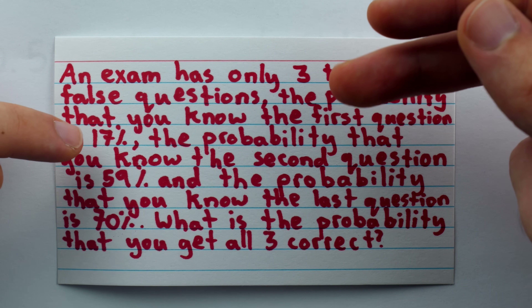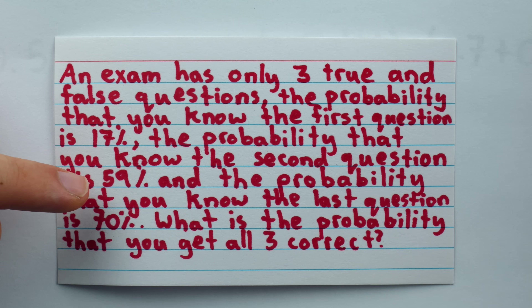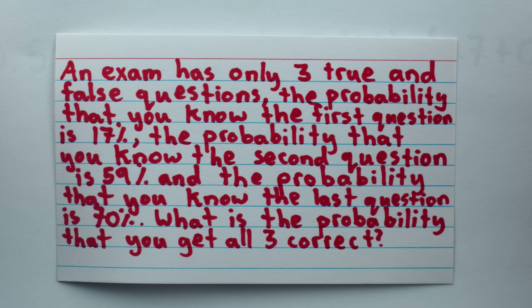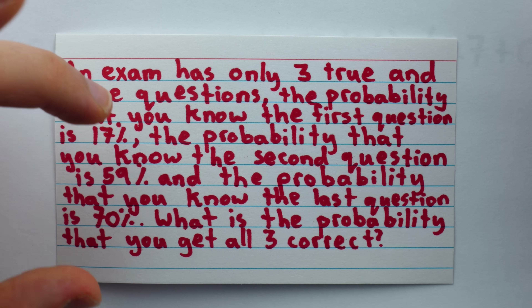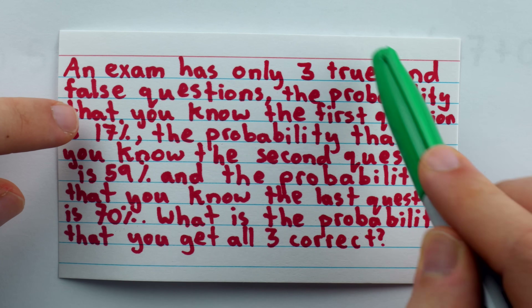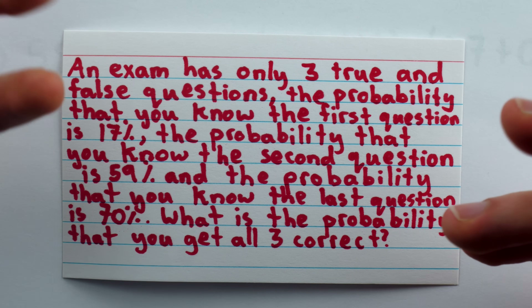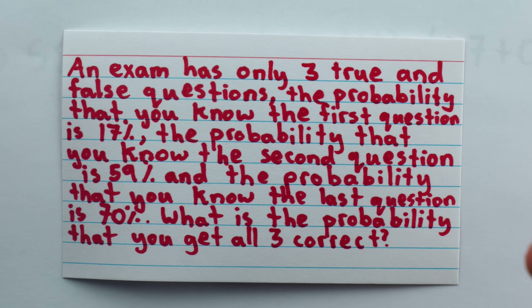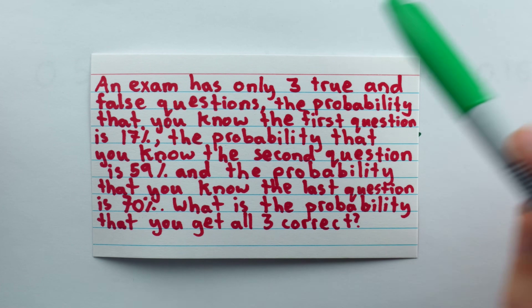It's just: 17% chance we get the first one right, 59% chance we get the second one right, and so on — and that would be a reasonable way to read the problem if it didn't specifically say the questions are true or false. So even if you don't know the information, there's still a great chance you get the question right. Let me know in the comments what you think — I'd be interested to hear your thoughts.